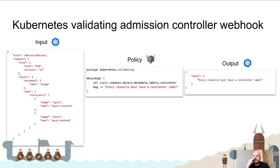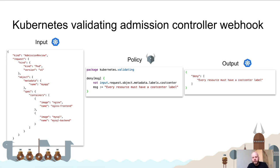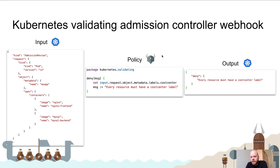The way it works is essentially the same as the REST API policy we saw before. The input is just JSON — in this case a pod being submitted for admission control. The policy checks if the input request object metadata labels does not contain a cost center attribute, and if so, the deny rule adds the string: 'every resource must have a cost center label.'